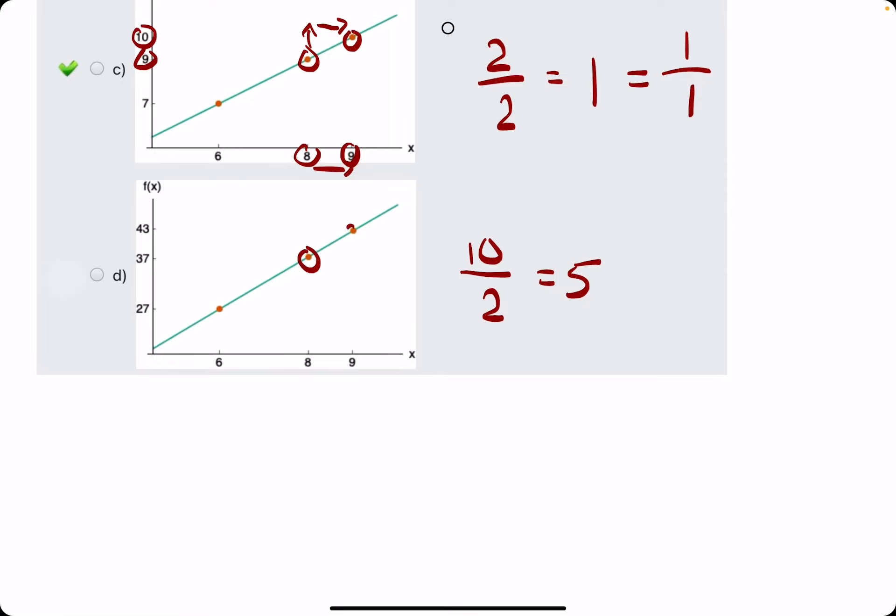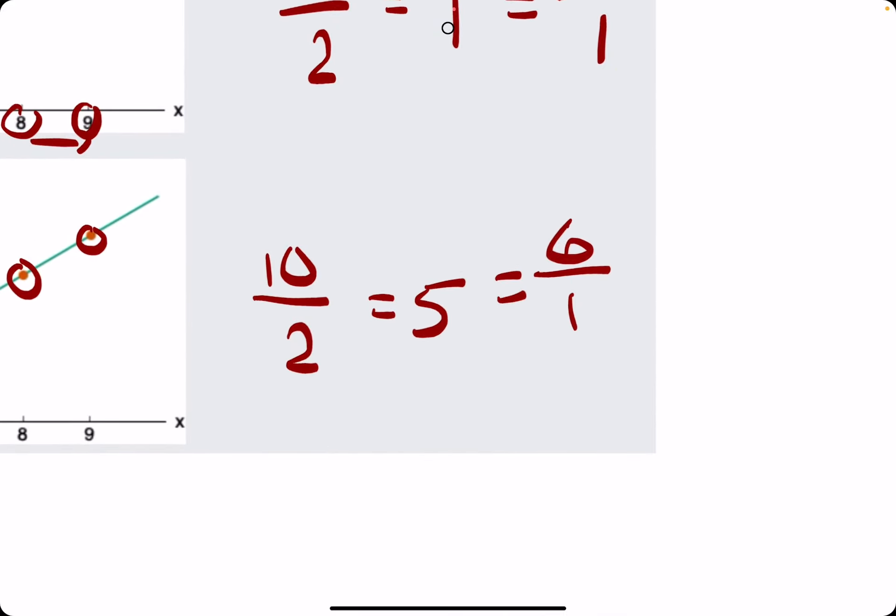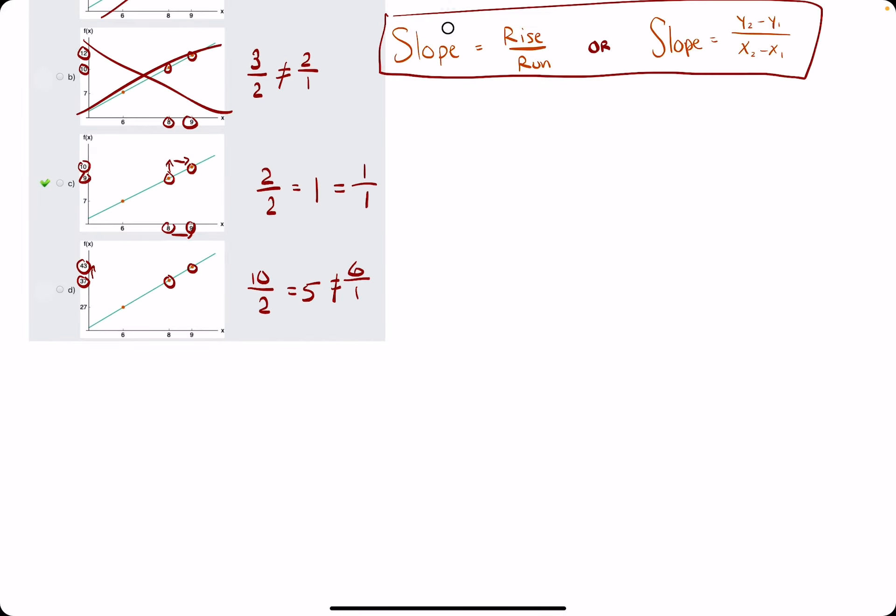And then between the second and third points, we get a rise of 6 from 37 to 43 and a run of 1 from 8 to 9. So that is 6 and 5 is not equal to 6.